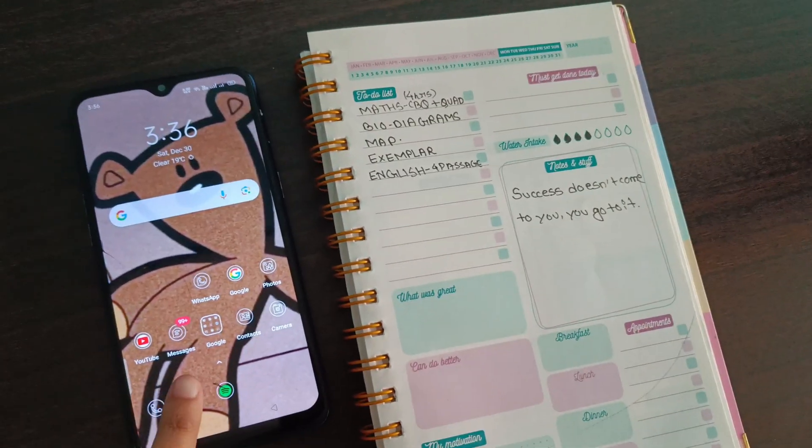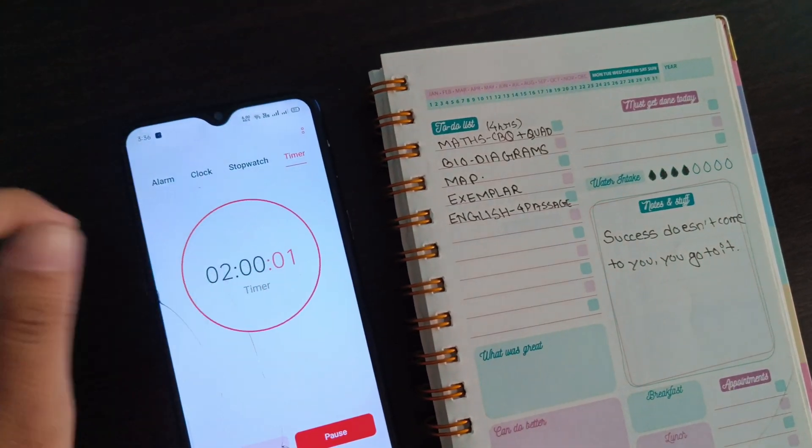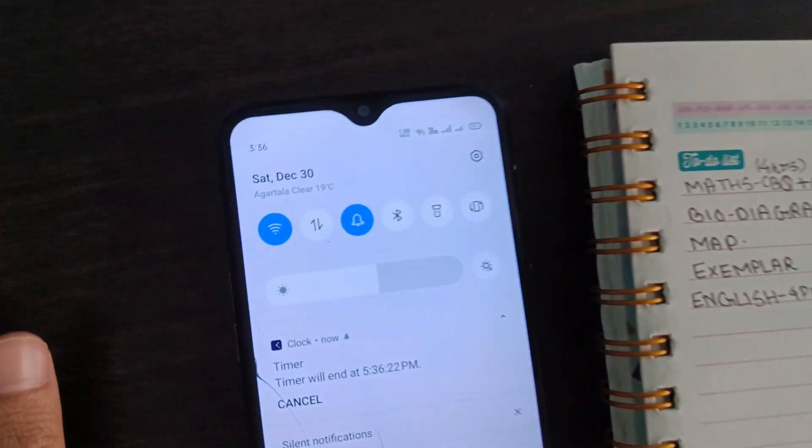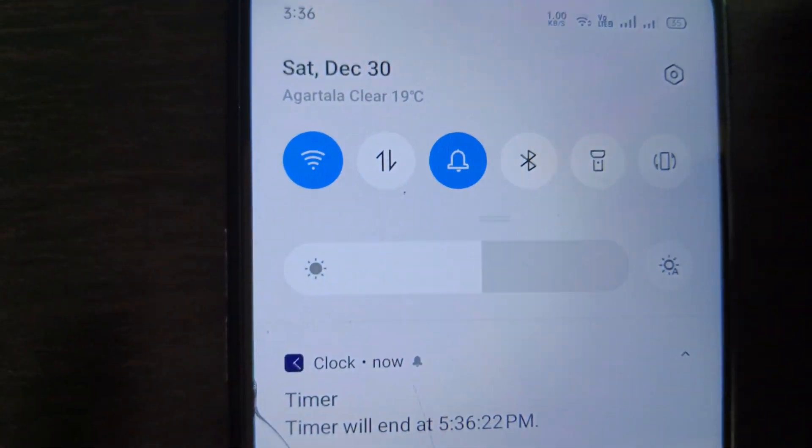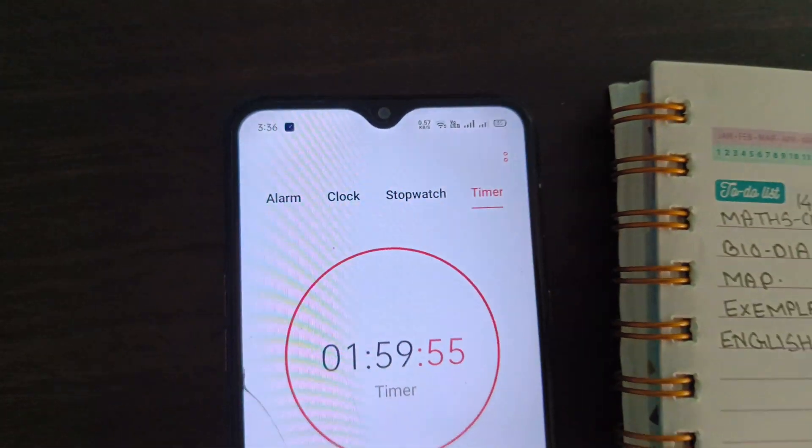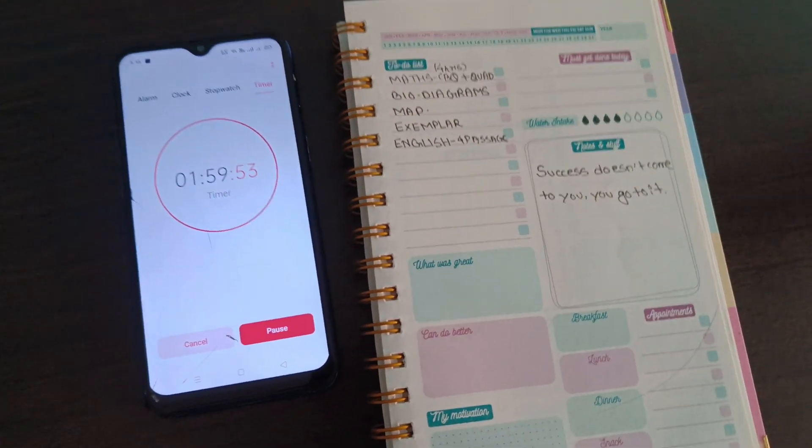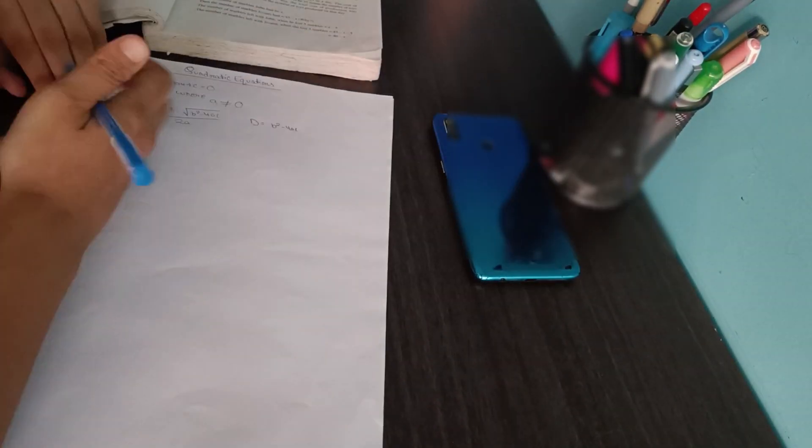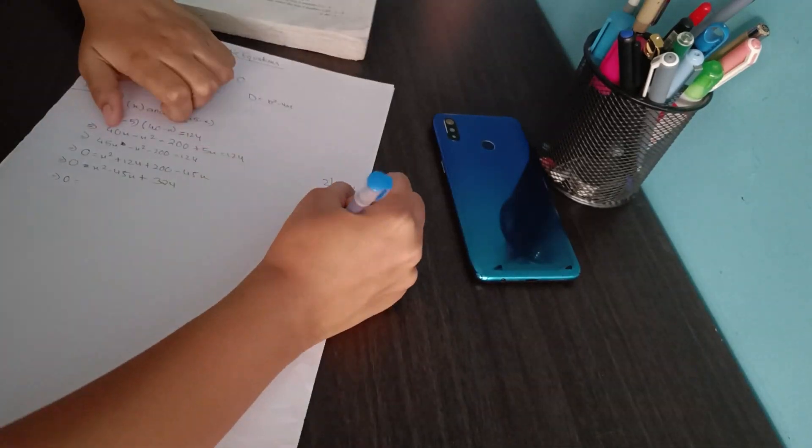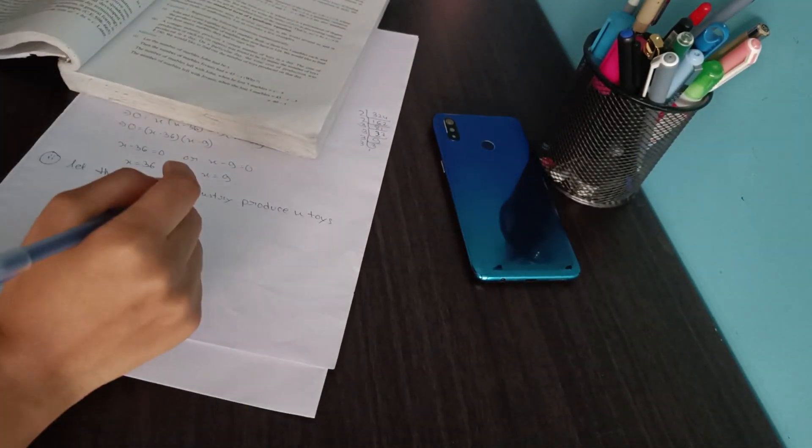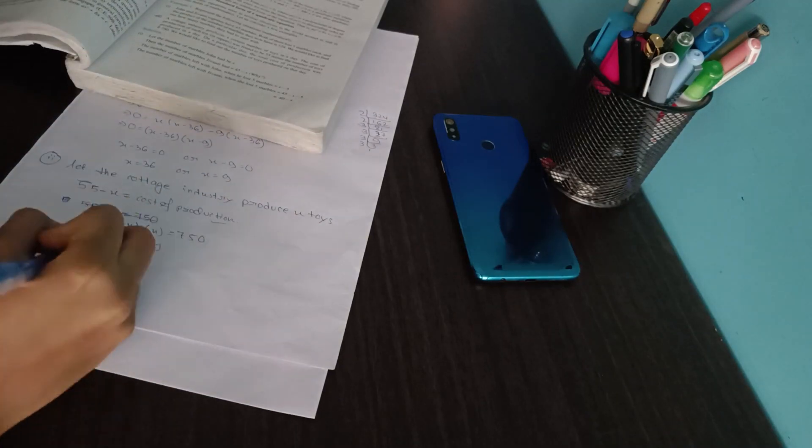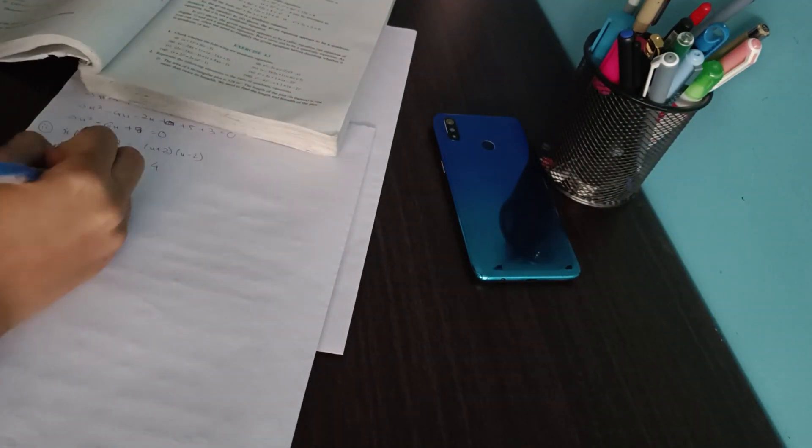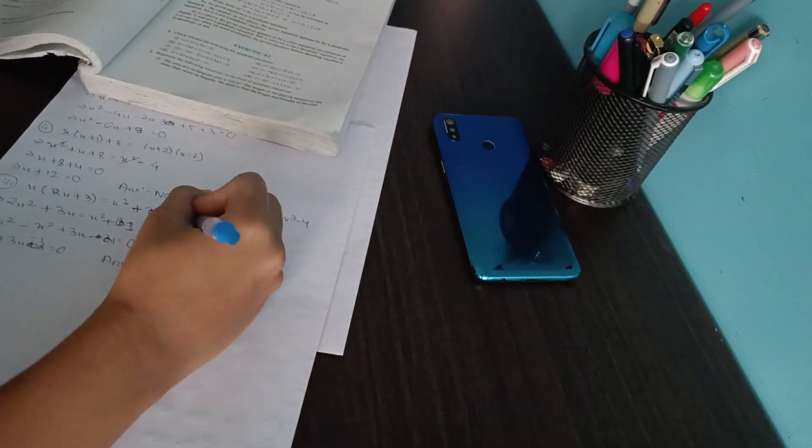Let's place a timer of 2 hours, which will end at 5:36 PM. Starting with mathematics now, the chapter quadratic equations. First I watched the introduction video of Mansi ma'am at 2x speed because most of the things were kind of familiar to me, as it hasn't been a very long time since I practiced this chapter.